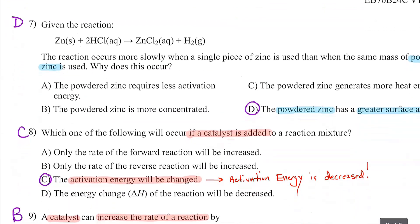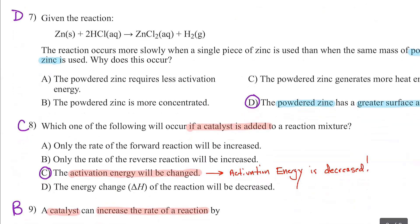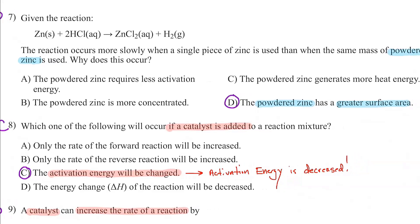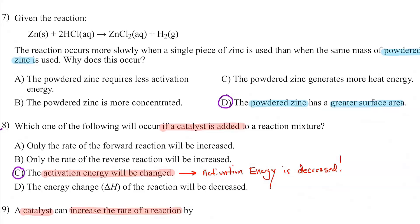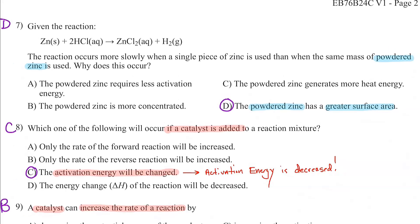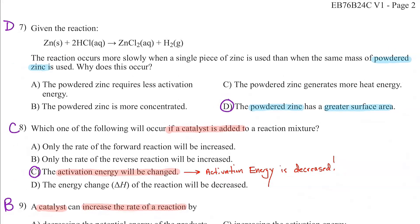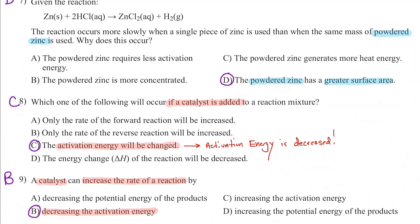Number seven: given this reaction, the reaction occurs more slowly when a single piece of zinc is used than the same mass as powder. We should know that powdered zinc has greater surface area — more exposure. That should be an easy one.